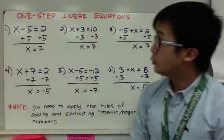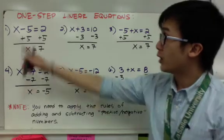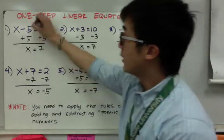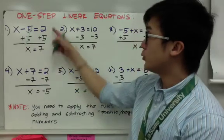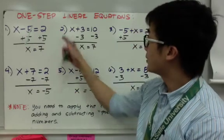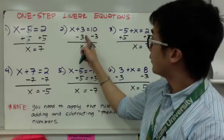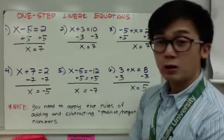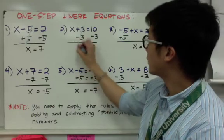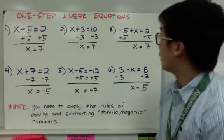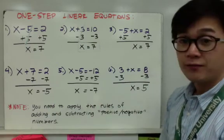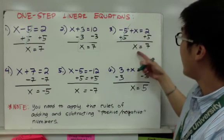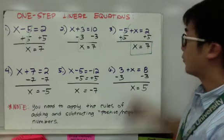Let's apply our new skill to more examples. For number 1, x minus 5 equals 2: add 5 to both sides, so x equals 2 plus 5, which is 7. For number 2, x plus 3 equals 10: subtract 3 from both sides, so x equals 7. For number 3, negative 5 plus x equals 2: add 5 to both sides, so x equals 2 plus 5, which is 7.